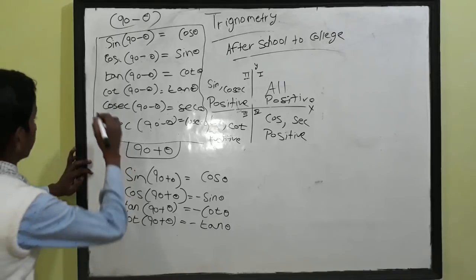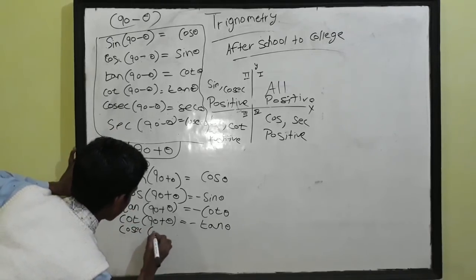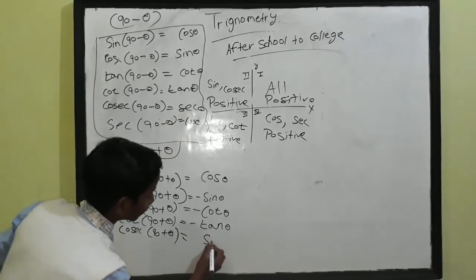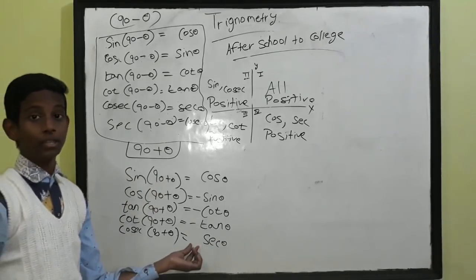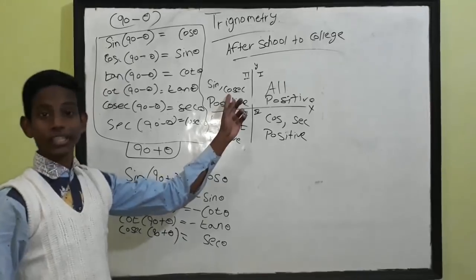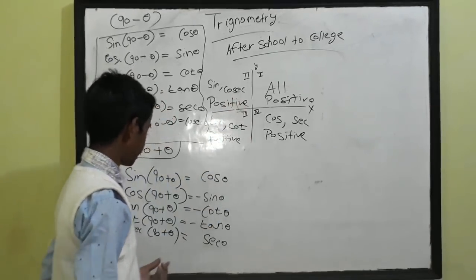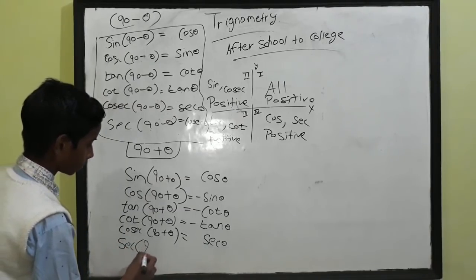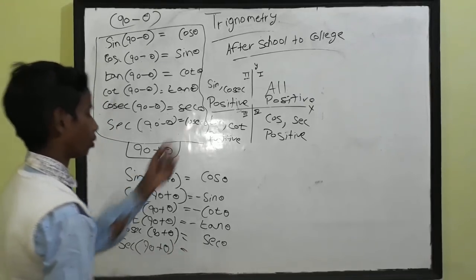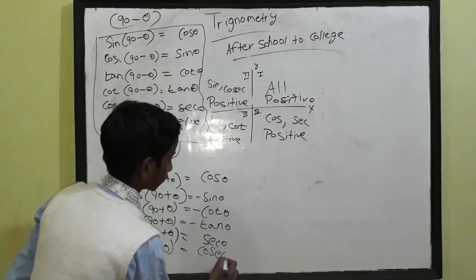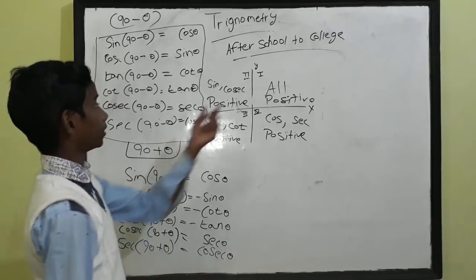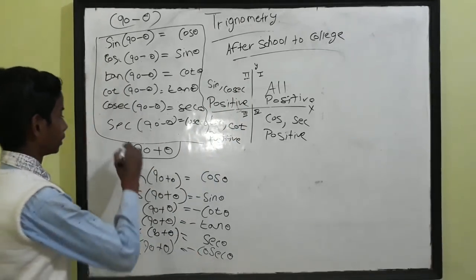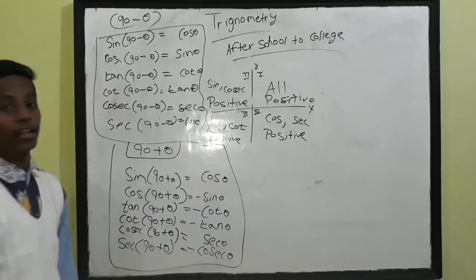Now talk about cosec(90 + θ). The answer involves sec. Which sign comes? Cosec is in the second quadrant and cosec is positive there, so cosec(90 + θ) = +sec θ. The last one: sec(90 + θ) = cosec θ. Is there any sec in the second quadrant? No — so it is negative: sec(90 + θ) = −cosec θ.